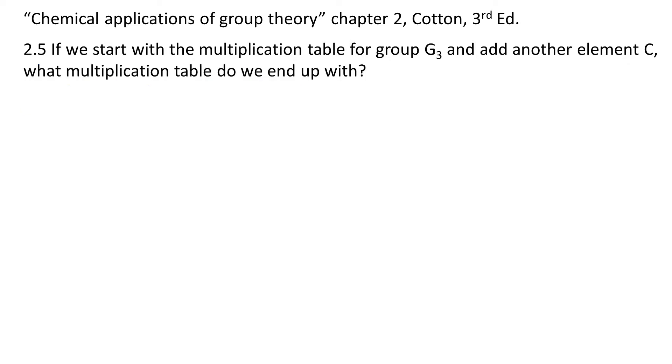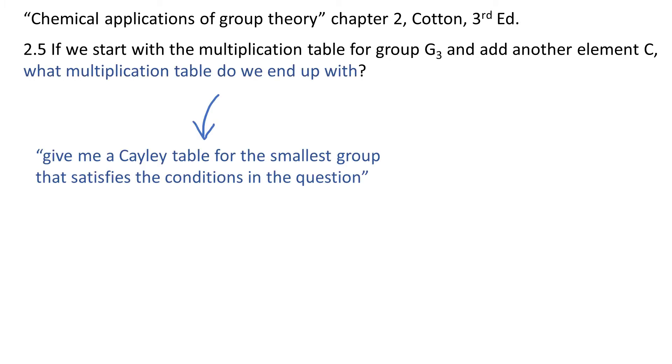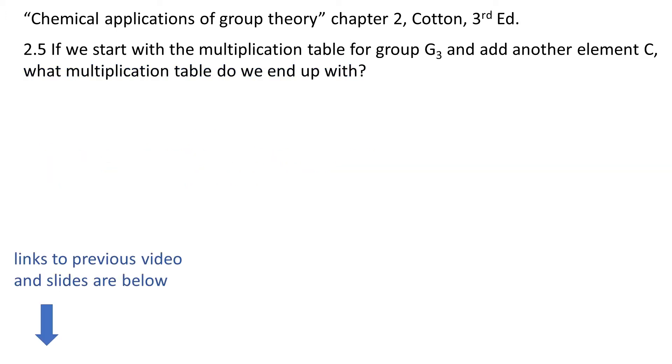So for the time being I will omit these constraints and I will address them at the end of the video. Also the question is formulated in a very casual way. So what multiplication table do we end up with actually means give me a Cayley table for the smallest group that satisfies the conditions in the question. Lastly please be aware that I'll be using some information from the previous video. The link is in the description, along with the link to the slides.